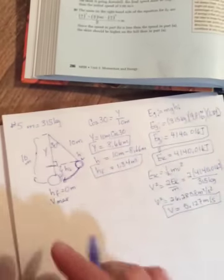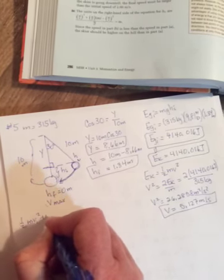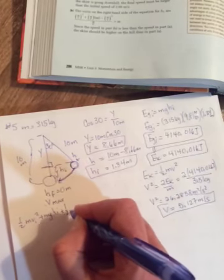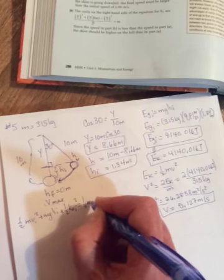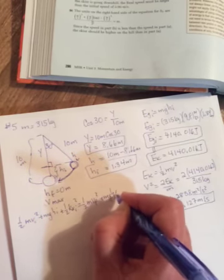The other way you could have done it was with our big long energy equation. 1/2 mv initial squared, mgh initial, 1/2 kx initial squared equals 1/2 mv final squared.